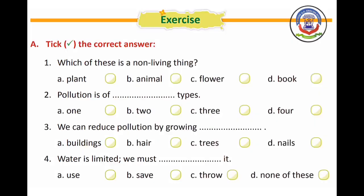Question A: Tick the correct answer. Number 1 — which of these is a non-living thing? Options: A) plant, B) animal, C) flower, D) book. The answer is option D, book.